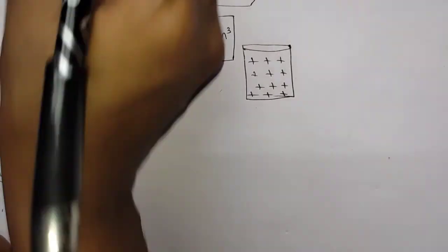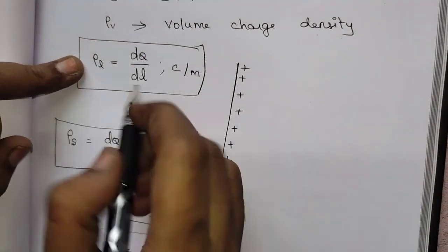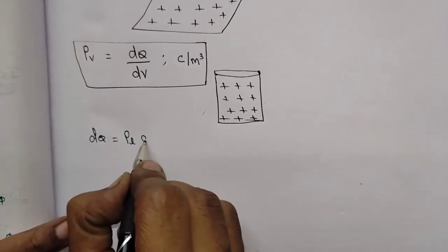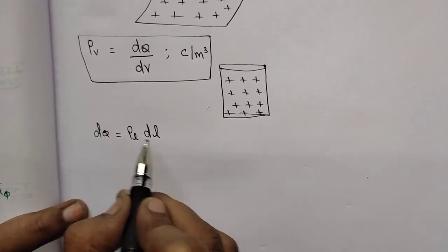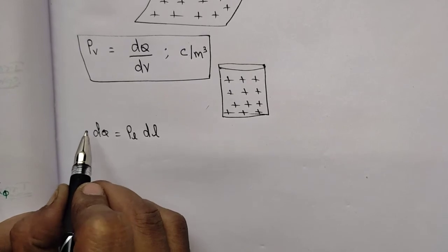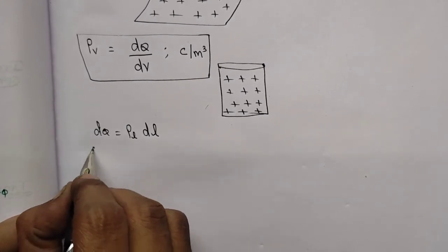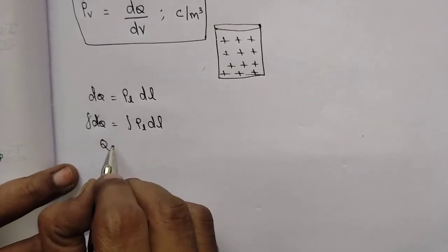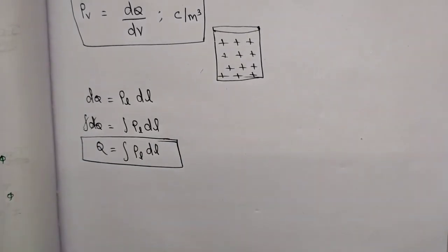If you have DQ, from the formula rho_L equals DQ divided by DL, you can cross-multiply to get DQ equals rho_L times DL. If you want to find the total charge Q, integrate both sides: integration of DQ equals integration of rho_L DL. The differentiation and integration cancel, giving Q equals the integral of rho_L DL. From this formula we can find the total charge.